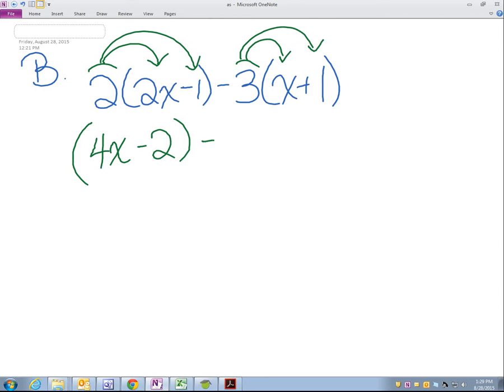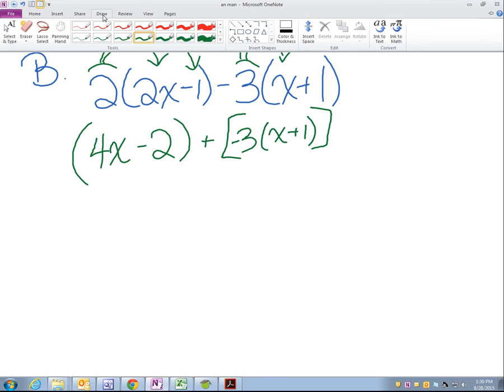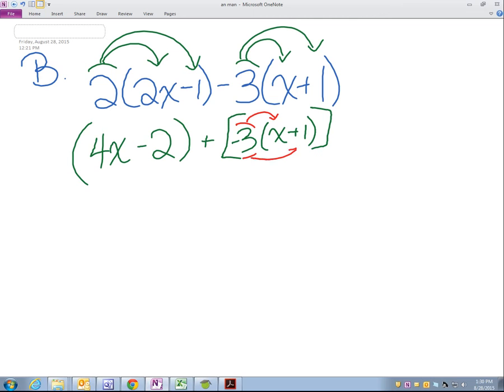Now we have to distribute that three there. There were a couple of issues with the additive inverse, where if it was simplified, we could also go that this here is actually going to be negative 3 times X plus 1. Because remember, the plus negative is just like subtraction. So now I'm going to go negative 3 times X and negative 3 times 1. I'm going to rewrite these: 4X minus 2 plus negative 3X minus 3.